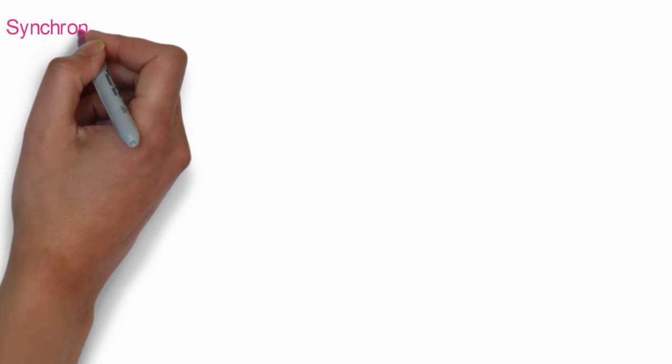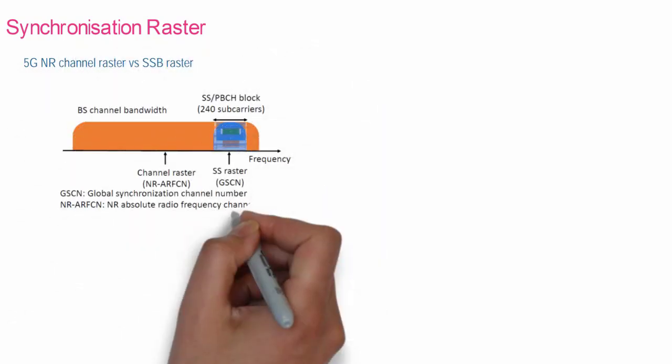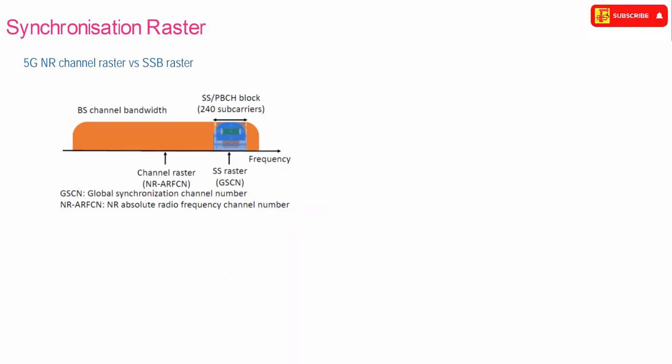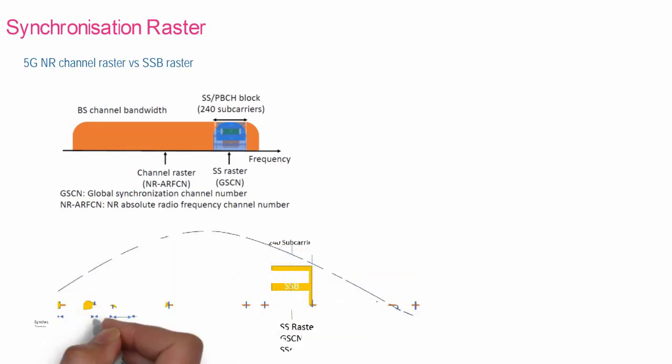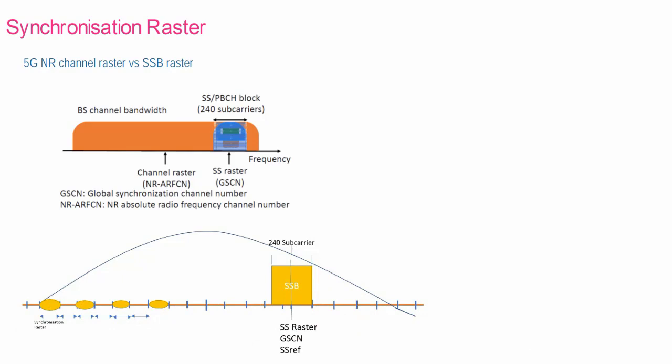The concept of channel raster in 5GNR is the same as LTE, but if the frequency interval uses 100 kHz like LTE, search time will be longer and impose higher performance requirements on the terminal. In 5G, the frequency range is very high, so scanning every 100 kHz channel raster would take too much time and affect UE performance.